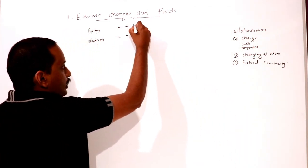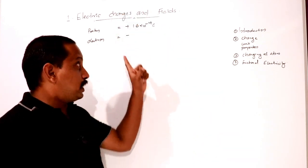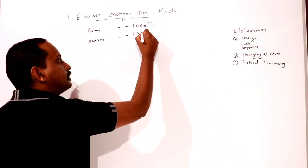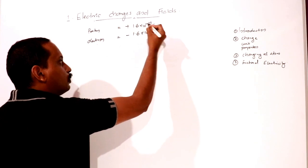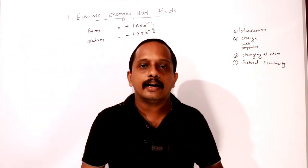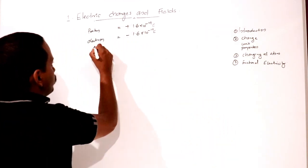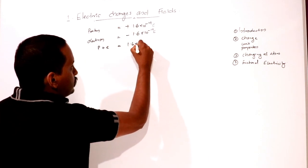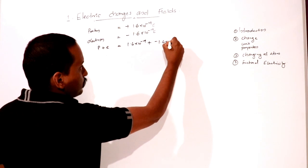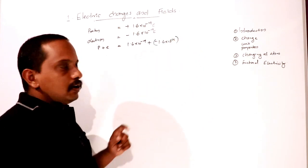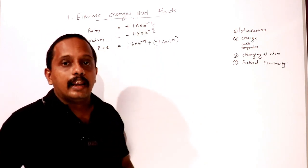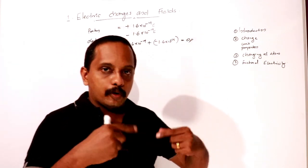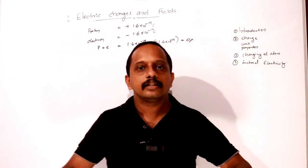The proton charge is +1.6 × 10⁻¹⁹ coulombs. The electron charge is −1.6 × 10⁻¹⁹ coulombs. When one proton and one electron are present together, the total charge is zero.